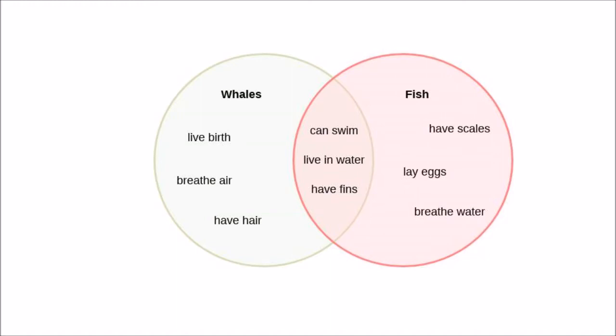The Venn Diagram represents pictorially the relationship among the variables of a boolean expression. It consists of rectangles inside of which are drawn overlapping circles, one for each variable. Each circle is labeled by a variable, with all points inside a circle belonging to that named variable and all points outside a circle not belonging to that variable.